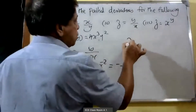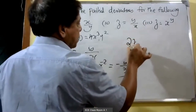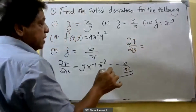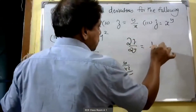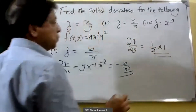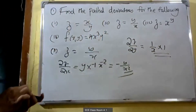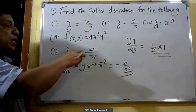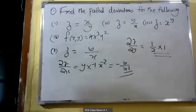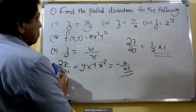Then ∂z/∂y. That is 1/x into 1. Here 1/x is a constant, derivative of y is equal to 1. Therefore ∂z/∂y = 1/x. That is the second problem.